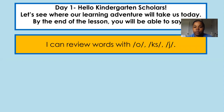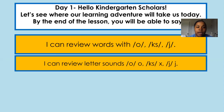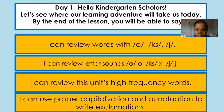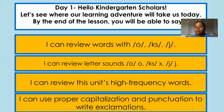I can review words with 'ah,' 'ks,' and 'juh.' I can review letter sounds: ah, ks, juh. I can review this unit's high-frequency words, meaning your sight words. And I can use proper capitalization and punctuation with an exclamation mark. An exclamation is a mark that has a line and a dot at the end of it, and it means to get excited — you say it loud, like 'I love ice cream!' So you say it with excitement, so the exclamation mark goes at the end.